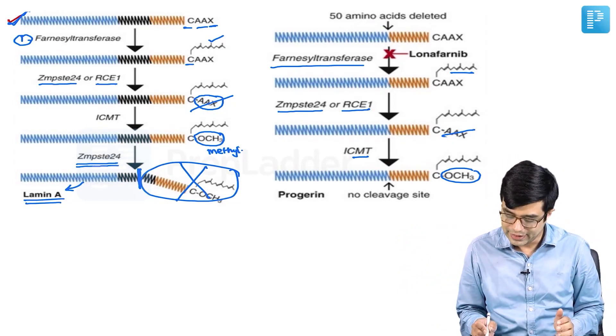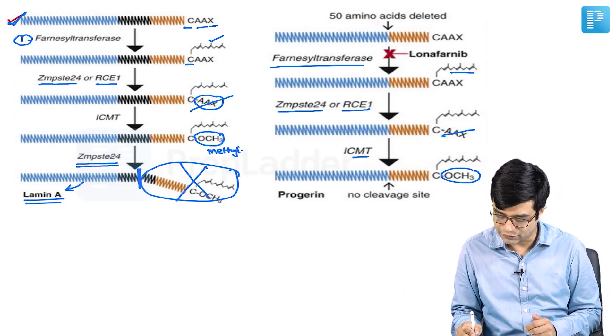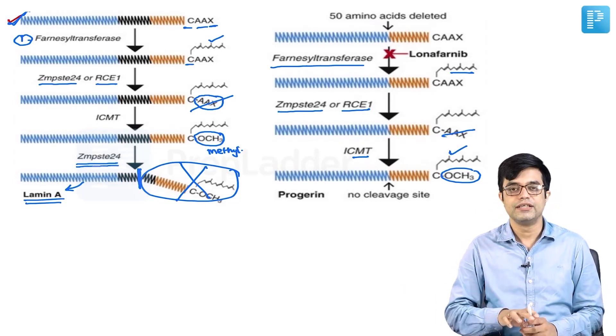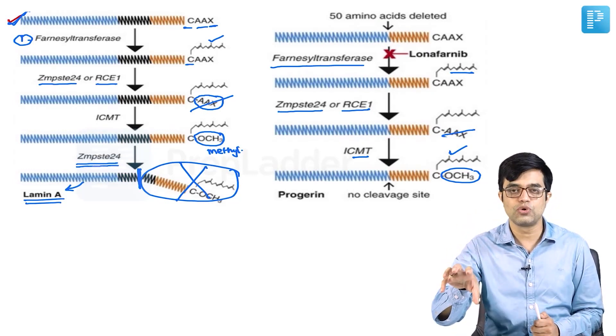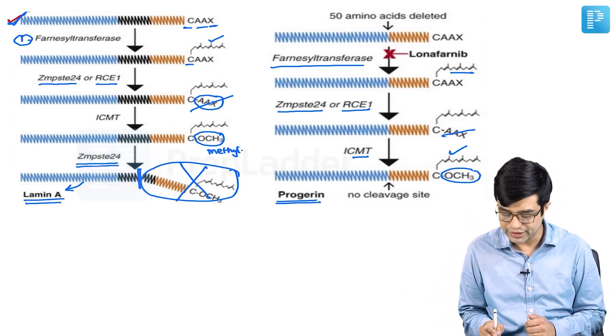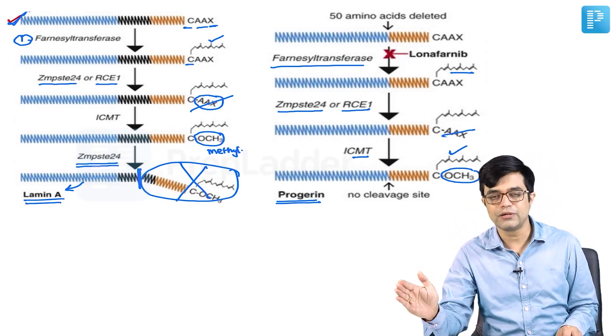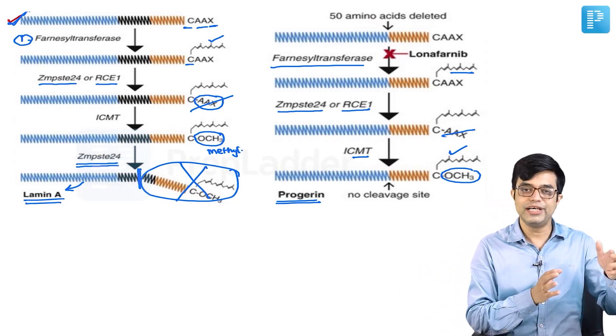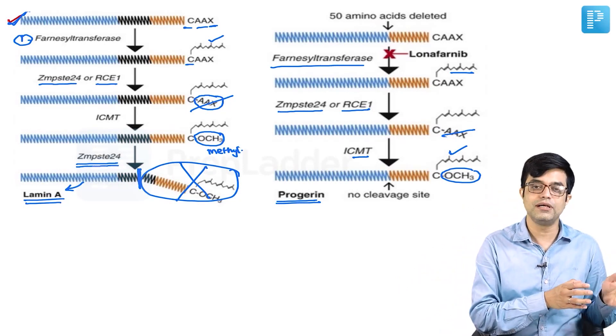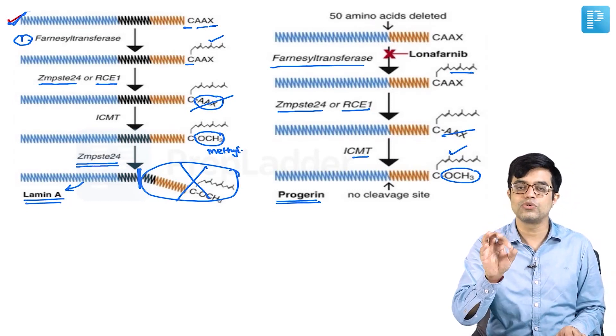It will cause a short but farnesylated protein. This farnesyl group will not go away. This farnesylated short protein will be produced in large numbers, and this is called progerin. Progerin will not only cause damage to the nuclear membrane, but will also interfere with the function of normal lamin A and lamin C, causing apoptosis in the patient.